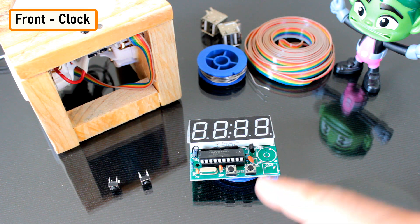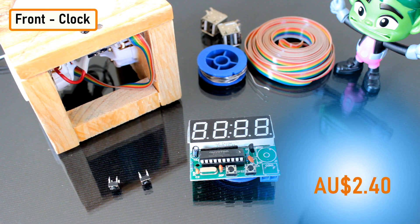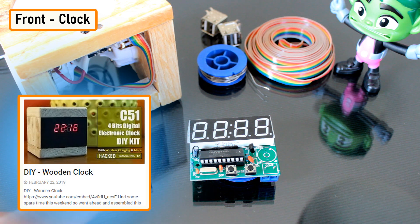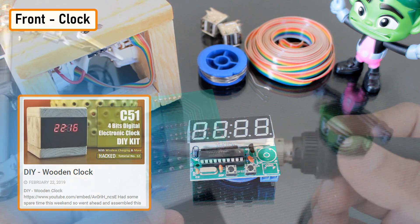For the front bit, I'm using a 4-bit DIY electronic digital clock which I bought from AliExpress for just $2.40. If you want to know more about this clock, please check out my tutorial number 12, DIY wooden clock. The link is in the description below.